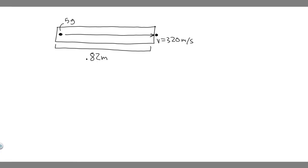In this problem, we're told a 5 gram bullet leaves the muzzle of a toy rifle with a speed of 320 meters per second. What force, assumed constant, is exerted on the bullet as it travels down the 0.82 meter long barrel of the toy rifle?